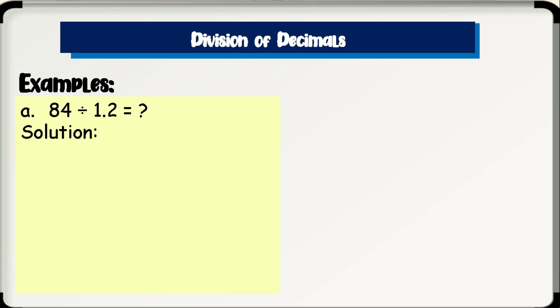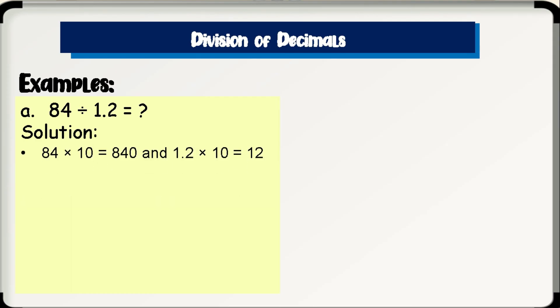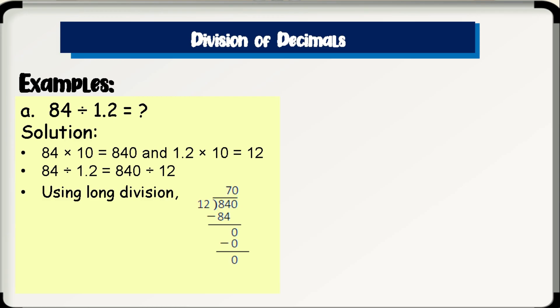Let's have some examples. Letter A: 84 divided by 1.2. Solution: since the divisor has 1 decimal place, multiply both the dividend and the divisor by 10. So 84 times 10 is 840 and 1.2 times 10 is 12. Hence, 84 divided by 1.2 is equal to 840 divided by 12. Using long division, we get 70 as the quotient. So 84 divided by 1.2 is equal to 70.